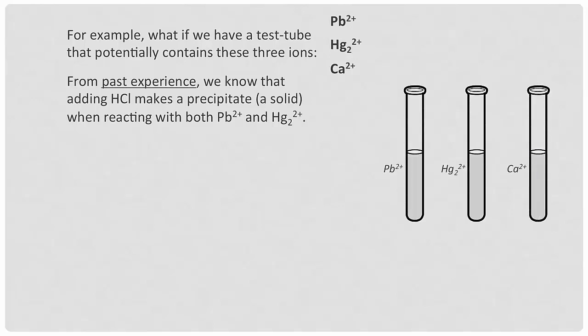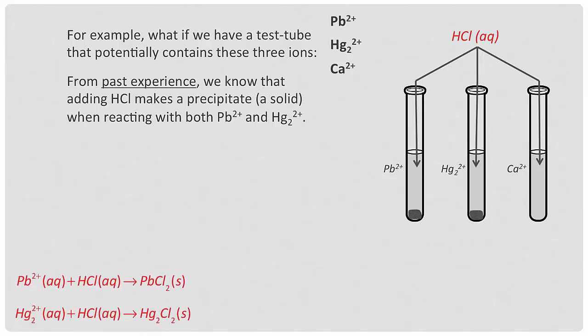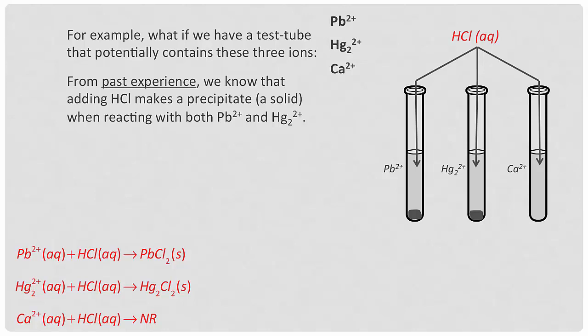Here are our three sample test tubes. If I add some HCl to my test tube and it has either lead or mercury, then a precipitate will form. However, the calcium solution will remain clear. We could write down what just happened in the form of a reaction — though note these reactions are not balanced; they're just showing what's happening with some details left out.